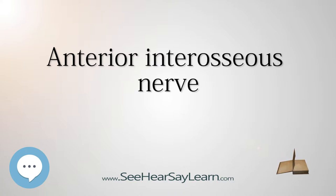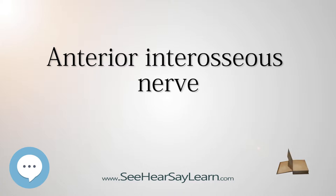It supplies the whole of the former and, most commonly, the radial half of the latter, ending below in the pronator quadratus and wrist joint. Many texts, for simplicity's sake, consider this nerve part of the median nerve.